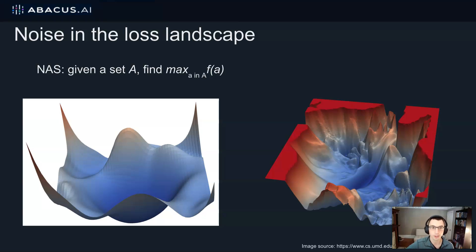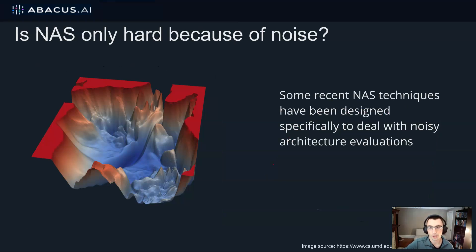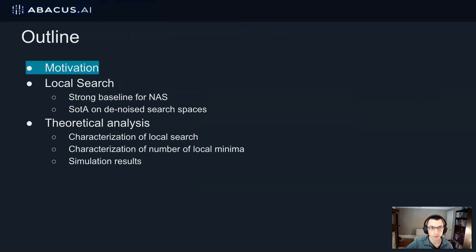It's actually more like the right, and the reason is because our function evaluations are noisy. Training a neural architecture is inherently a noisy process — we run stochastic gradient descent and get different accuracies even training the same architecture multiple times. Because our function evaluations are noisy, our objective function is noisy, and the optimization problem is challenging. Some recent NAS techniques have been designed specifically to deal with this noise. So a natural question is: how much of the hardness of NAS can be attributed to noise in the architecture training? This is the question that we study.